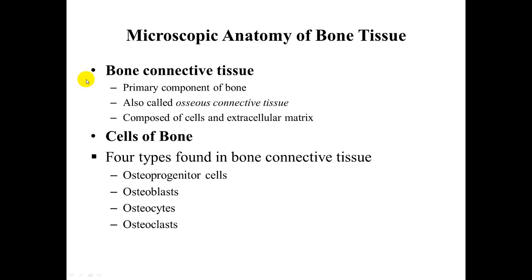The bone connective tissue is the primary component of bone. It is often called the osseous connective tissue and it is composed of several cells and an extracellular matrix — a very dense extracellular matrix.